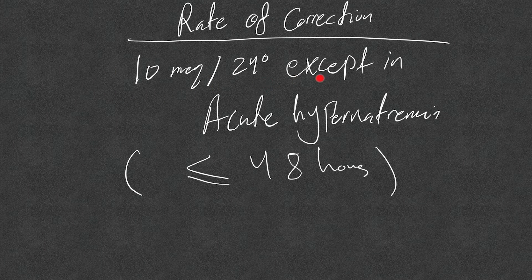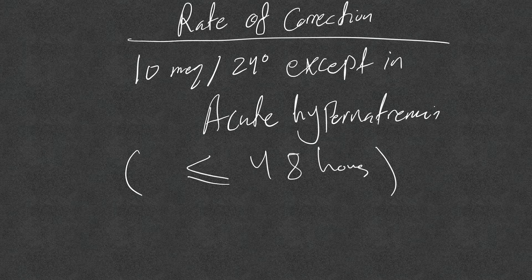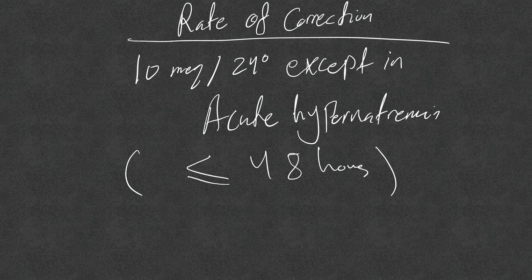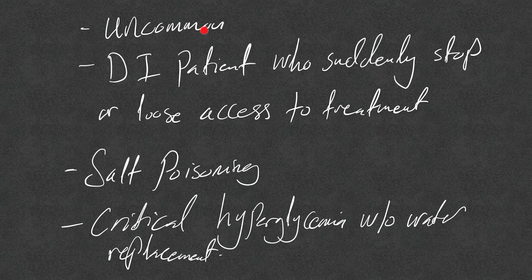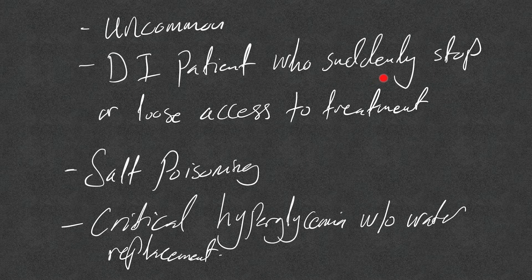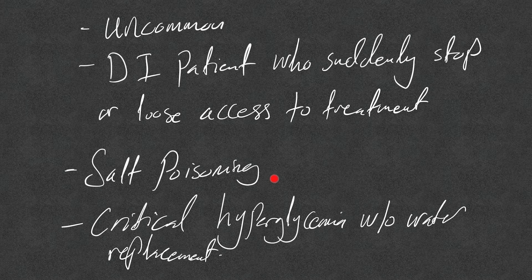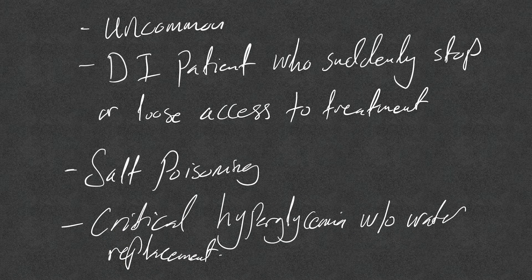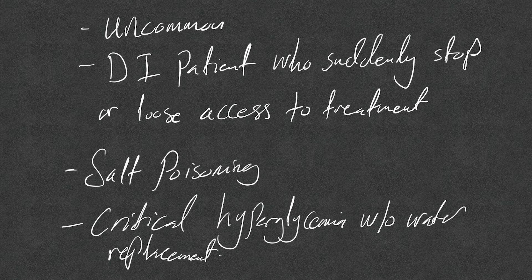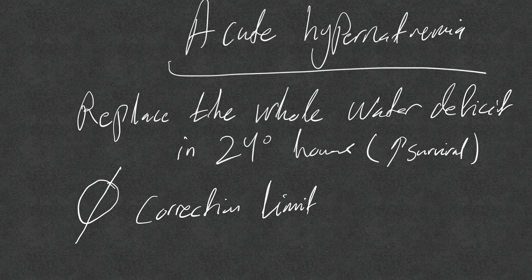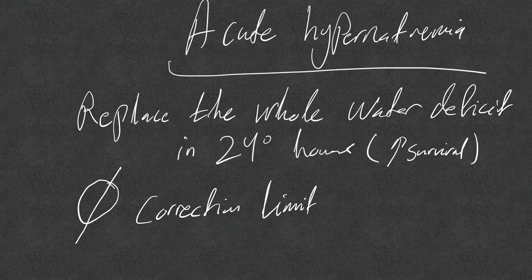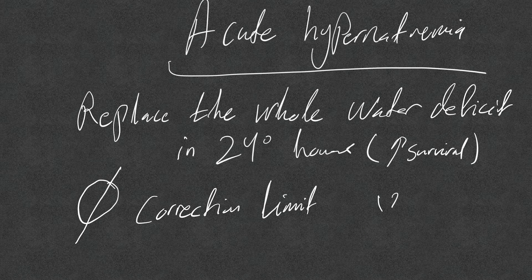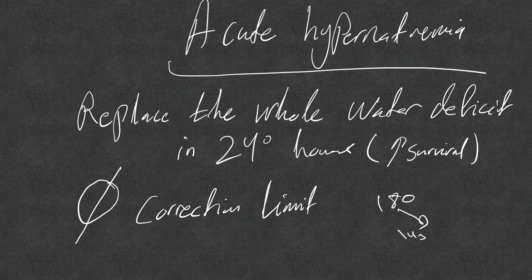Rate of correction, again, we said 10 milliequivalents per 24 hours in chronic hypernatremia, except in acute hypernatremia, which is hypernatremia present less than 48 hours. The definition of this less than 48 hours: I want to consider that only in the following cases. DI, and it's uncommon, of course—DI patients who suddenly stop or lost access to their treatment. Or salt poisoning, very rare if somebody ingests a massive amount of salts that contain sodium. And critical hyperglycemia without water replacement, I'll come to that. But these are the cases that we really need to think of possible acute hypernatremia, so we need to replace the whole water deficit in 24 hours because this improves survival. There is no correction limit. Don't worry, even if the sodium is 180, we need to drop it to 145 in one day.